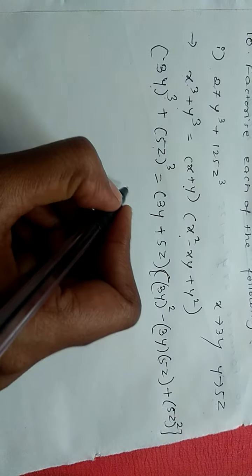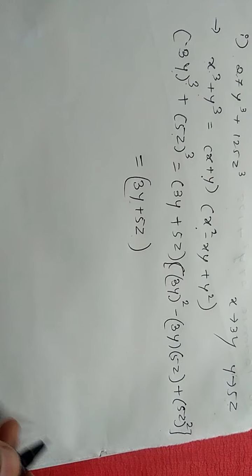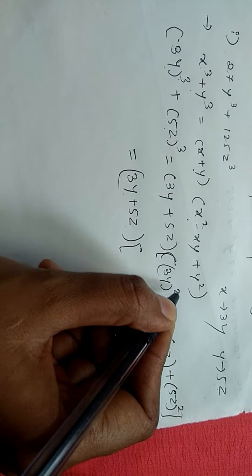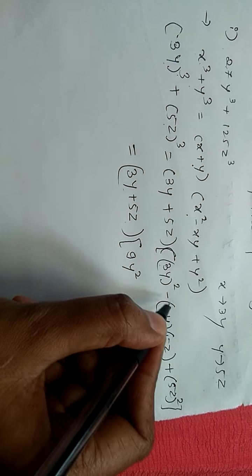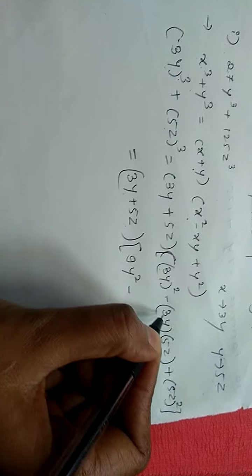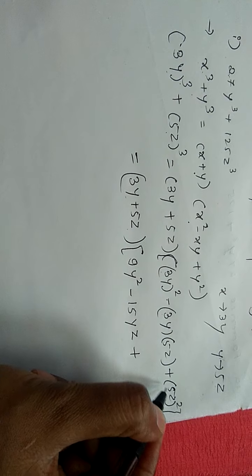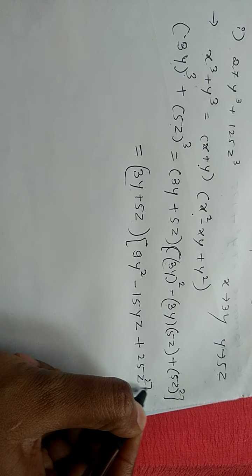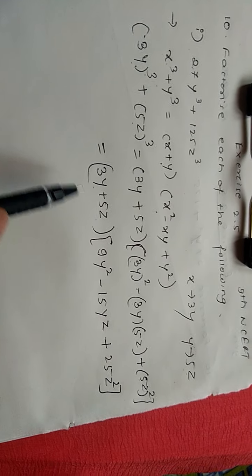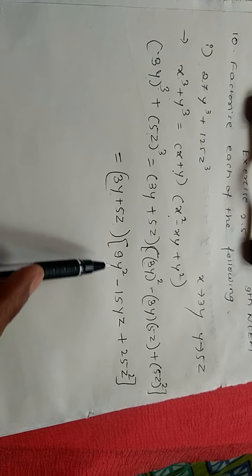So solve this: 3y plus 5z you can't add, so keep as it is because these are unlike terms. Next solve this bracket: 3y whole square is 9y square, minus 3 times 5z is 15yz plus 5 square is 25z square, bracket complete. Further you can't solve this as there are unlike terms. So this is the factorization of 27y cube plus 125z cube.